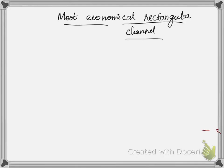Hello everyone, this is Dr. Surya. Today we are going to see a derivation for the most economical rectangular channel. When the section of a channel is said to be most economical, the cost of construction is going to be minimum. That channel is called a most economical section or most economical channel. The cost mainly depends on the excavation and lining of the channel.